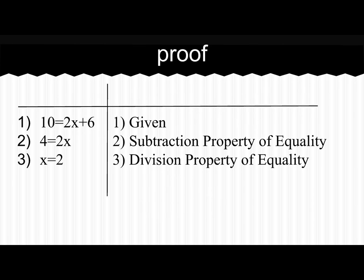For a proof of a linear example, the equation would be 10 equals 2x plus 6, that's given. Then you would subtract 6 on both sides so that you get 4 equals 2x, and you do that by the subtraction property of equality. Then you divide by 2 on both sides so that you get x equals 2, which is the division property of equality.